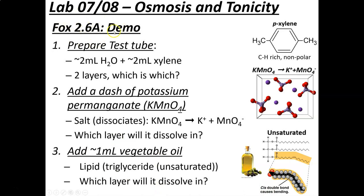For 2.6a from FOX, we're going to take a test tube and put two mils of water and two mils of xylene in it. Xylene has a ring structure with methyl groups, and things that tend to have methyl groups and ring structures are often nonpolar. In fact, xylene is a nonpolar solution, and water, obviously, is polar.